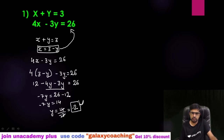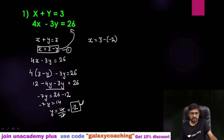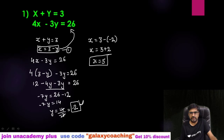Now I have the value of y as minus 2. Just keep this value of y in the first result. It was x equals 3 minus y, so on the place of y put minus 2. This minus sign and the value of y being minus 2 — minus minus becomes plus — so x equals 3 plus 2, which gives x equals 5. This way you can easily find out the value of x and y.